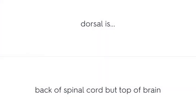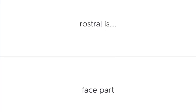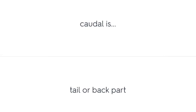Dorsal is the back of the spinal cord but the top of the brain. Ventral is the belly of the spinal cord and bottom of the brain. Rostral is the face part. Caudal is the tail or back part.